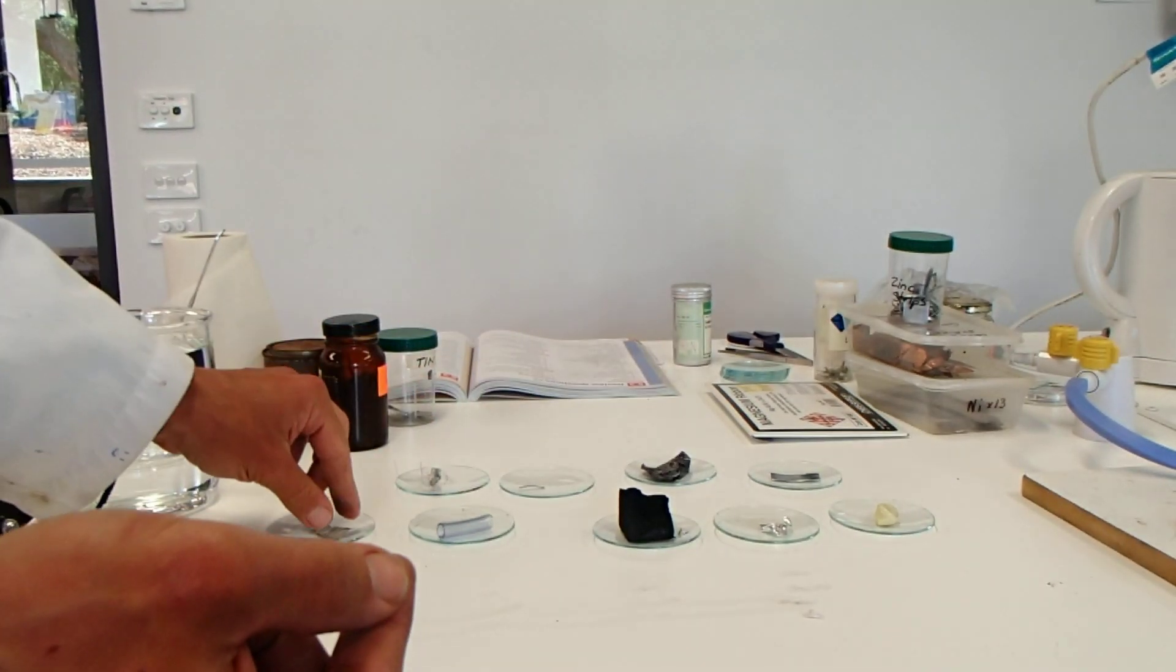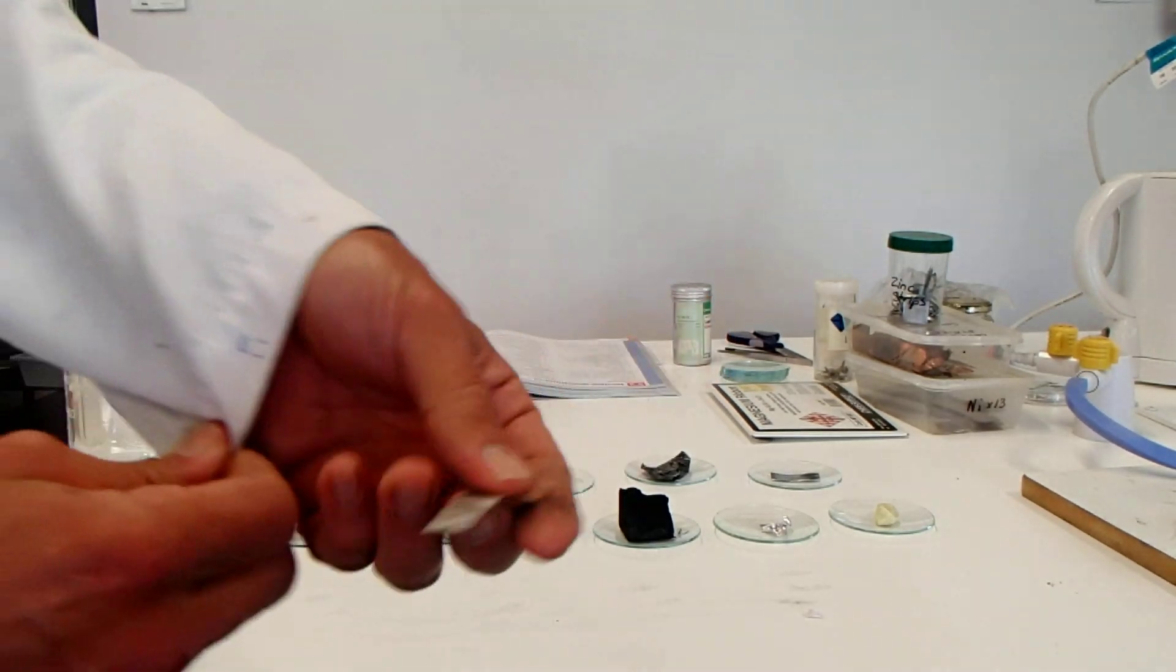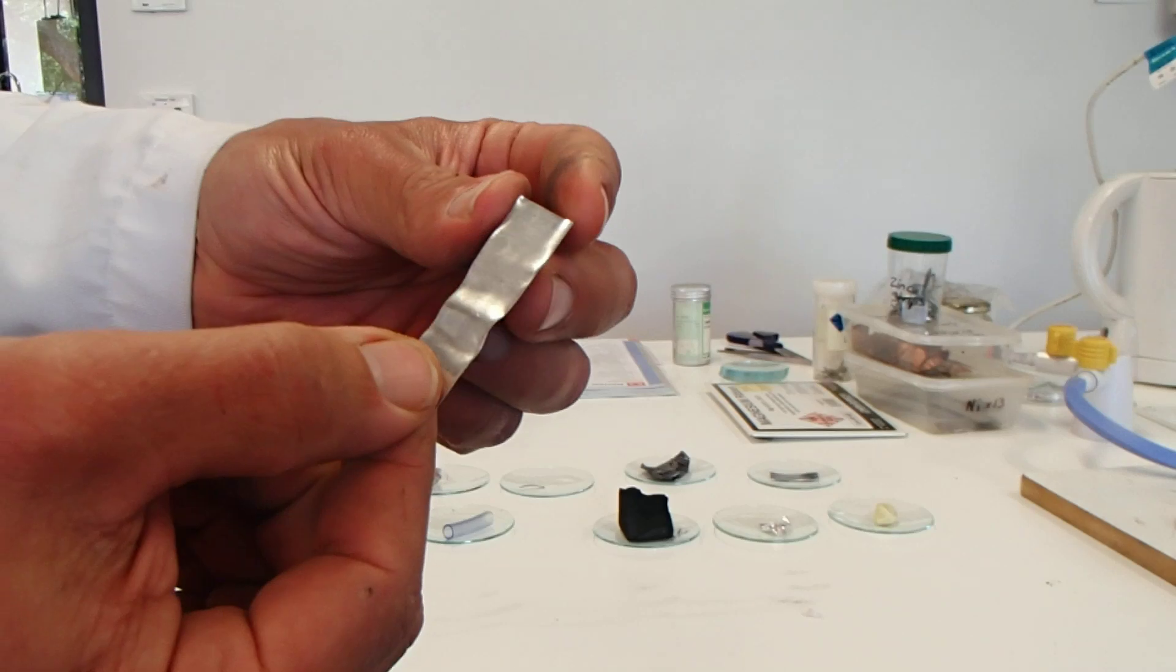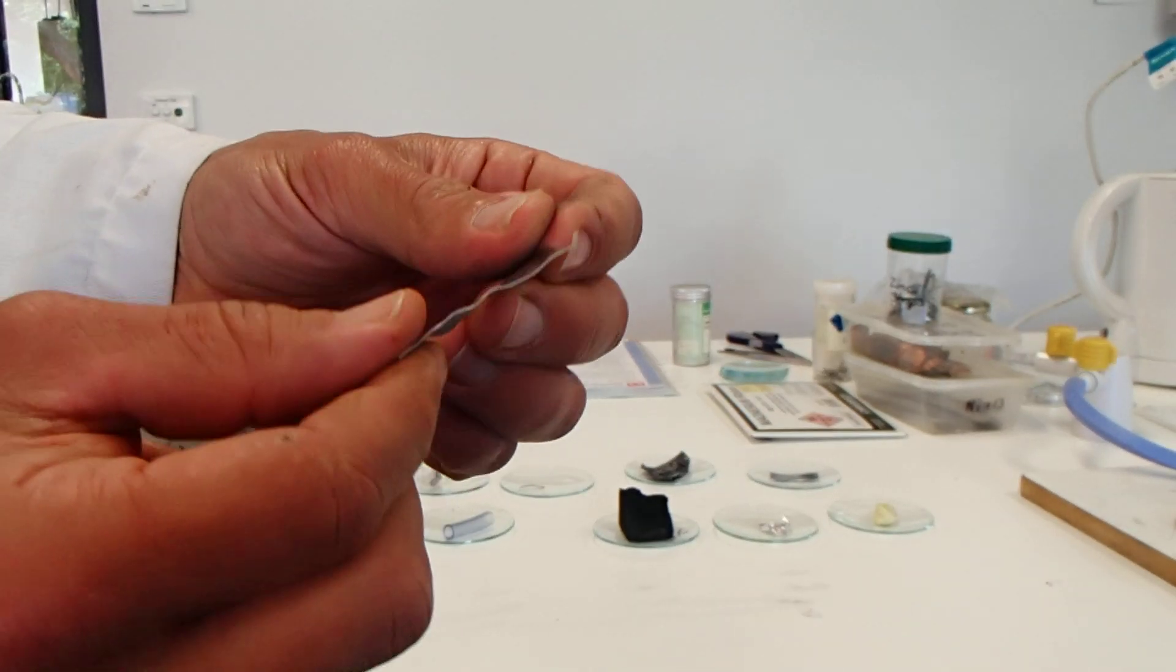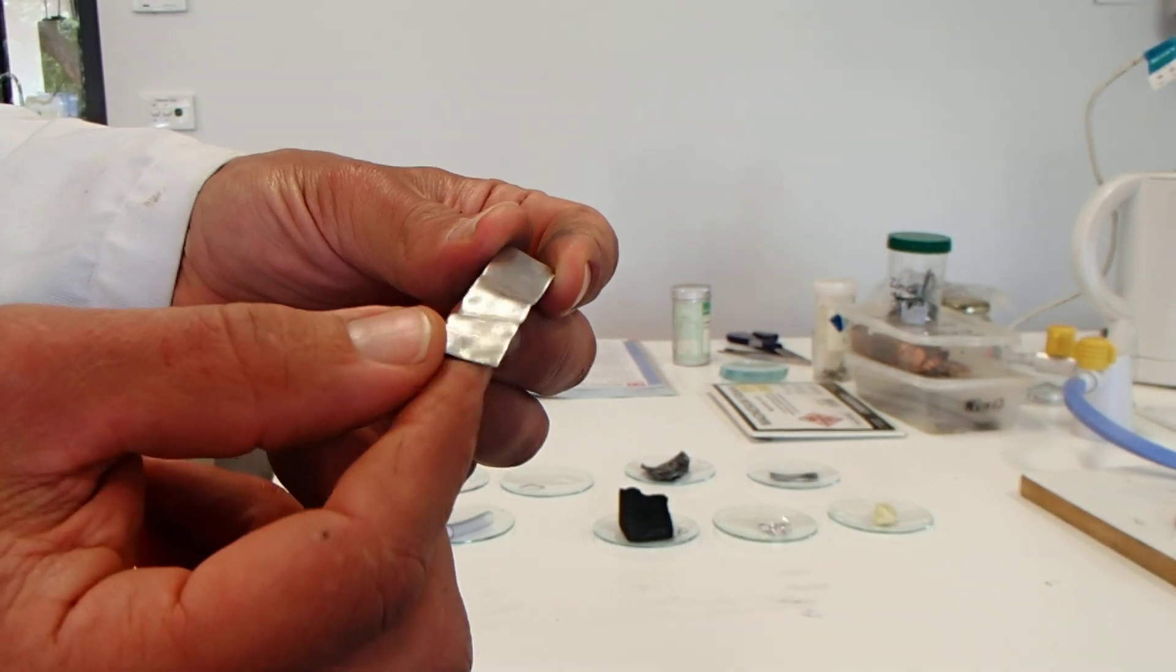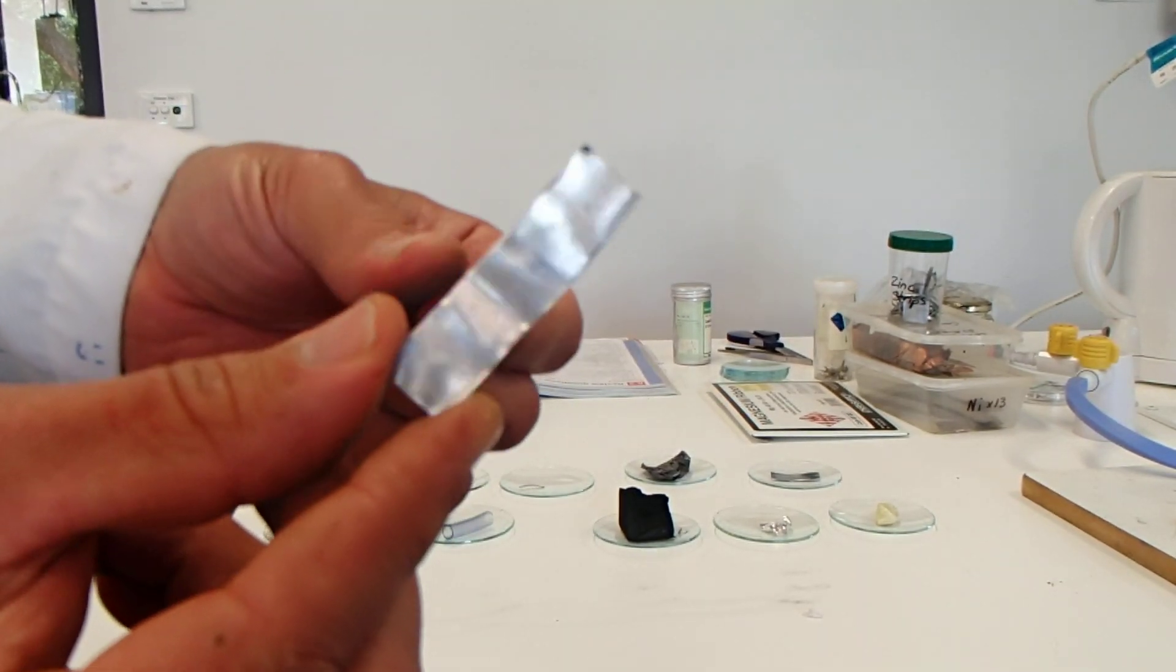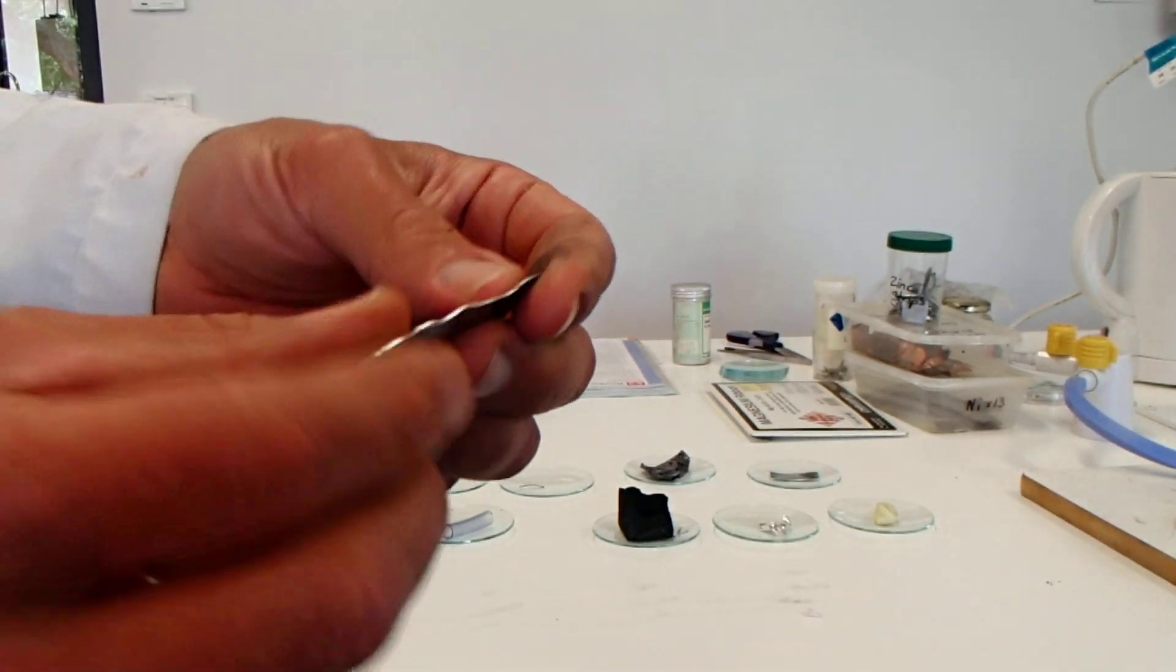Next we have tin. Looks like a classical metal, shiny but not super shiny, quite light, silver in color. So that's tin, quite smooth.